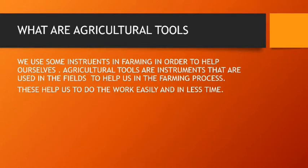While Baswa's father was doing the farming, three farming tools were mentioned: khorige, khunti, and ilige. These are Kannada names for hoe, plough, and sickle. Agricultural tools are instruments that are used in the fields to help us in the farming process. These help us to do the work easily and in less time.